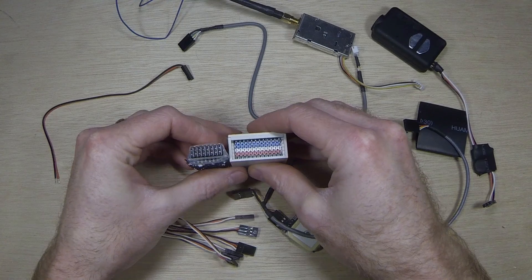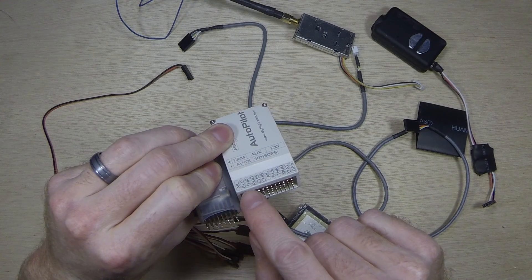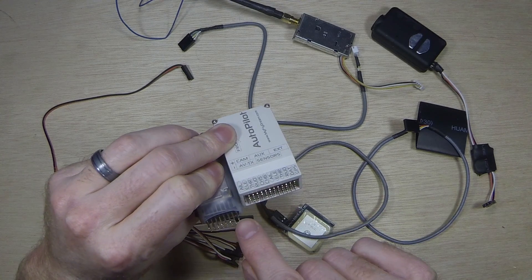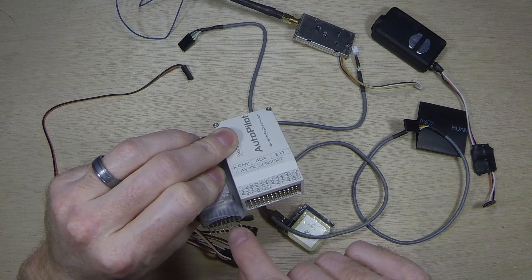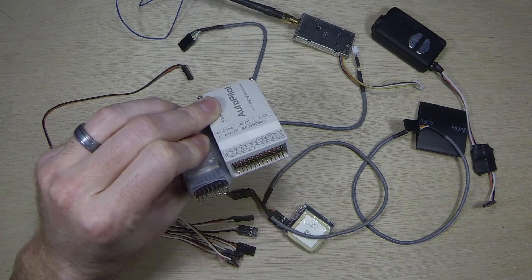My transmitter is set up aileron, elevator, throttle, rudder, channel 5, channel 6. So, all I have to do is connect channel 1 to aileron, channel 2 to elevator, 3 to throttle, 4 to rudder, 5 to 5, and 6 to 6.